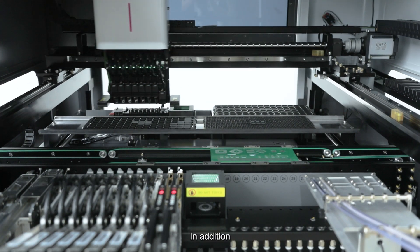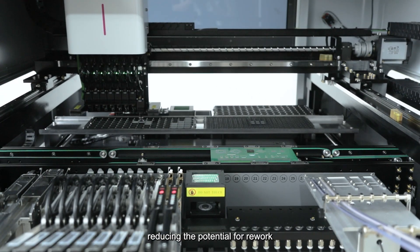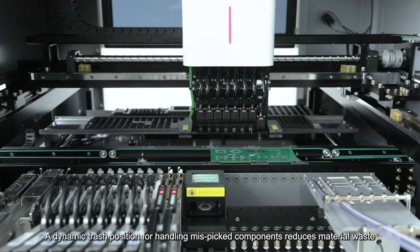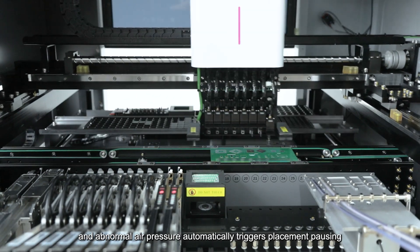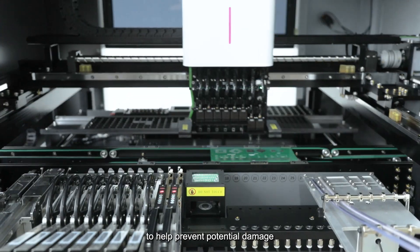In addition, nozzle air pressure measurement reduces mispicks and tombstoning, reducing the potential for rework. The dynamic trash position for handling mispicked components reduces material waste, and abnormal air pressure automatically triggers placement pausing to help prevent potential damage.